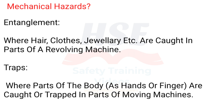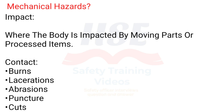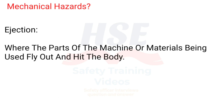Entanglement: where hair, clothes, jewelry, etc. are caught in parts of a revolving machine. Traps: where parts of the body such as hands or fingers are caught or trapped in parts of moving machines. Impact: where the body is impacted by moving parts or processed items. Contact: burns, lacerations, abrasions, puncture, cuts. Ejection: where parts of the machine or materials being used fly out and hit the body.